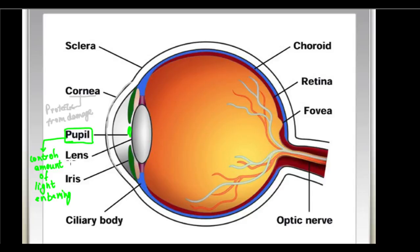From the pupil we come to the lens. The lens is obviously a lens which is present in the eye. It is a crystalline, flexible lens — it is a double convex lens.